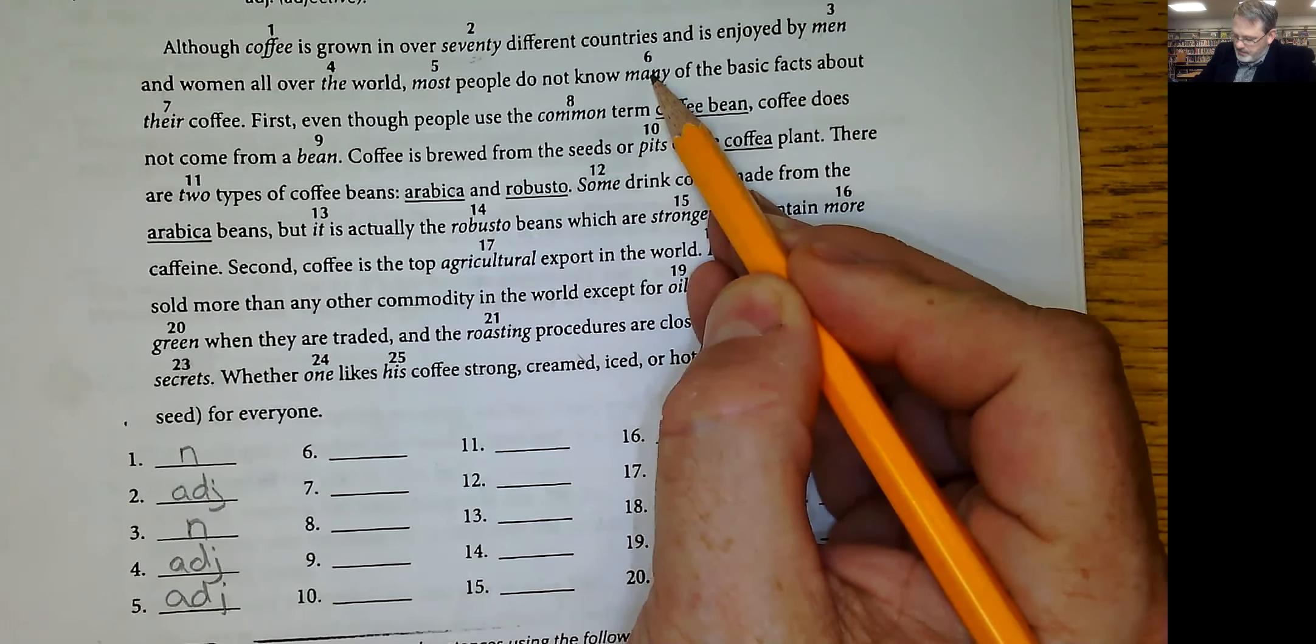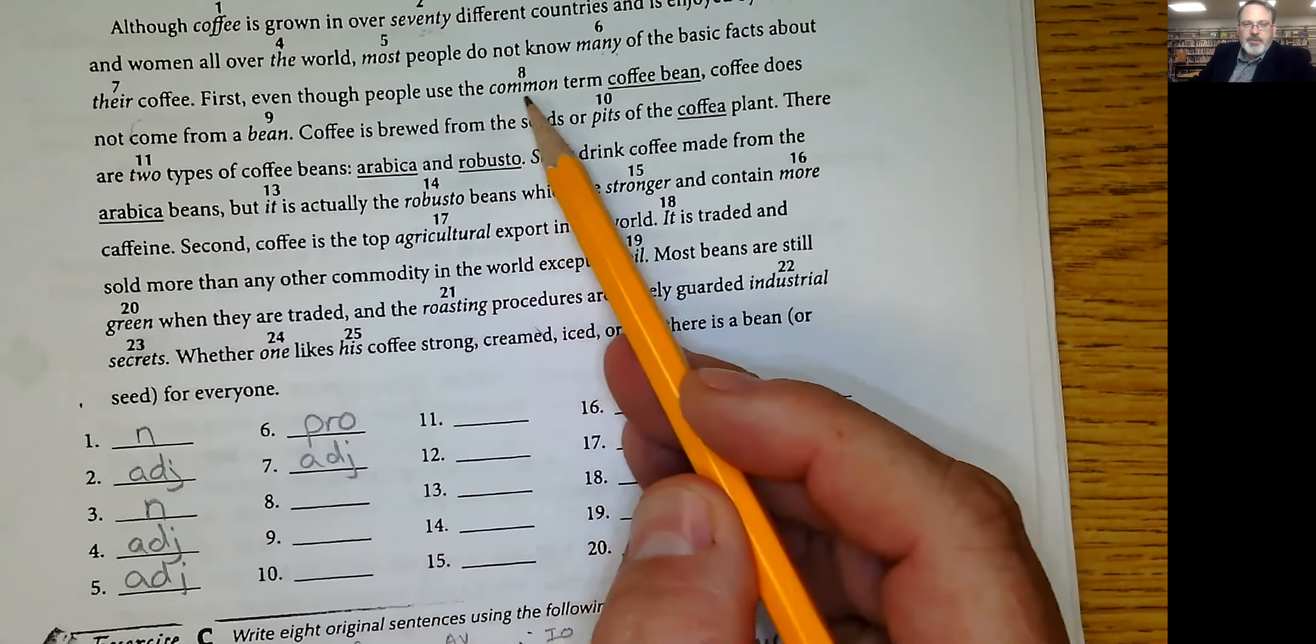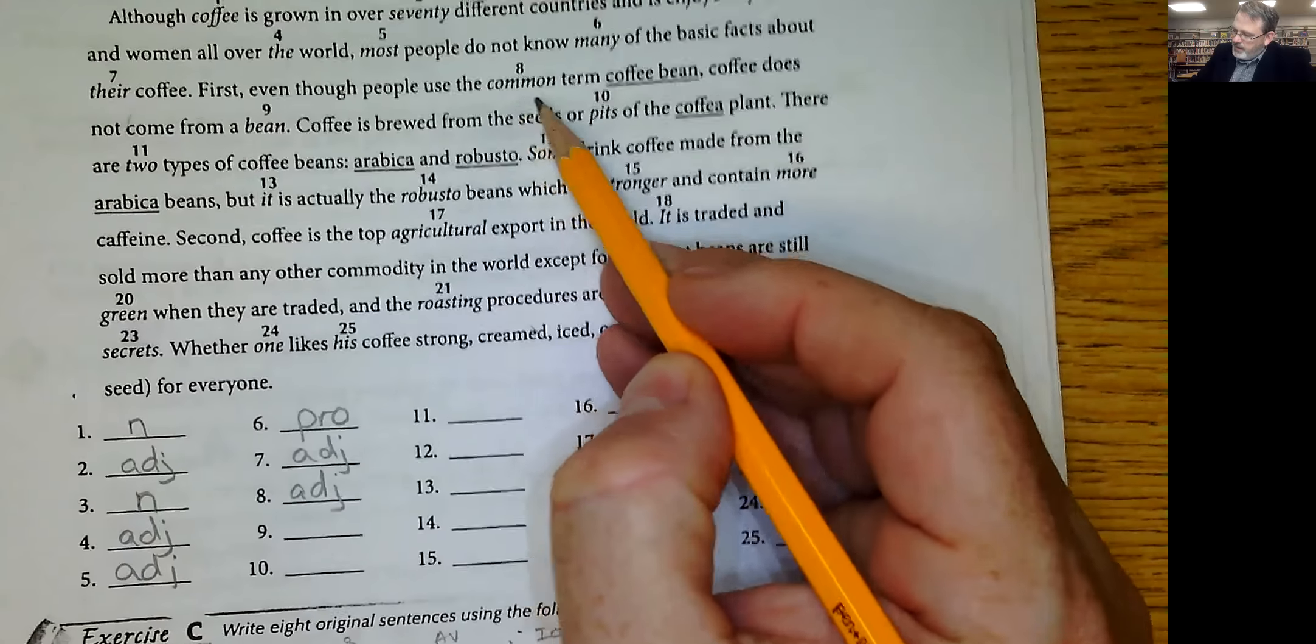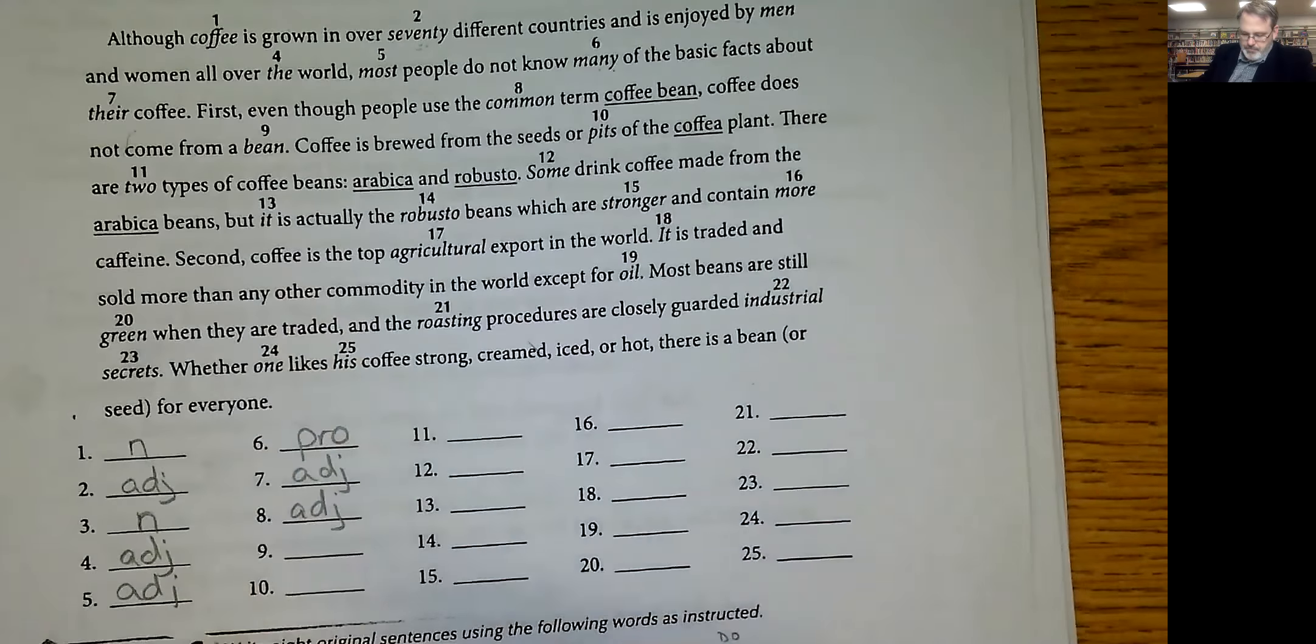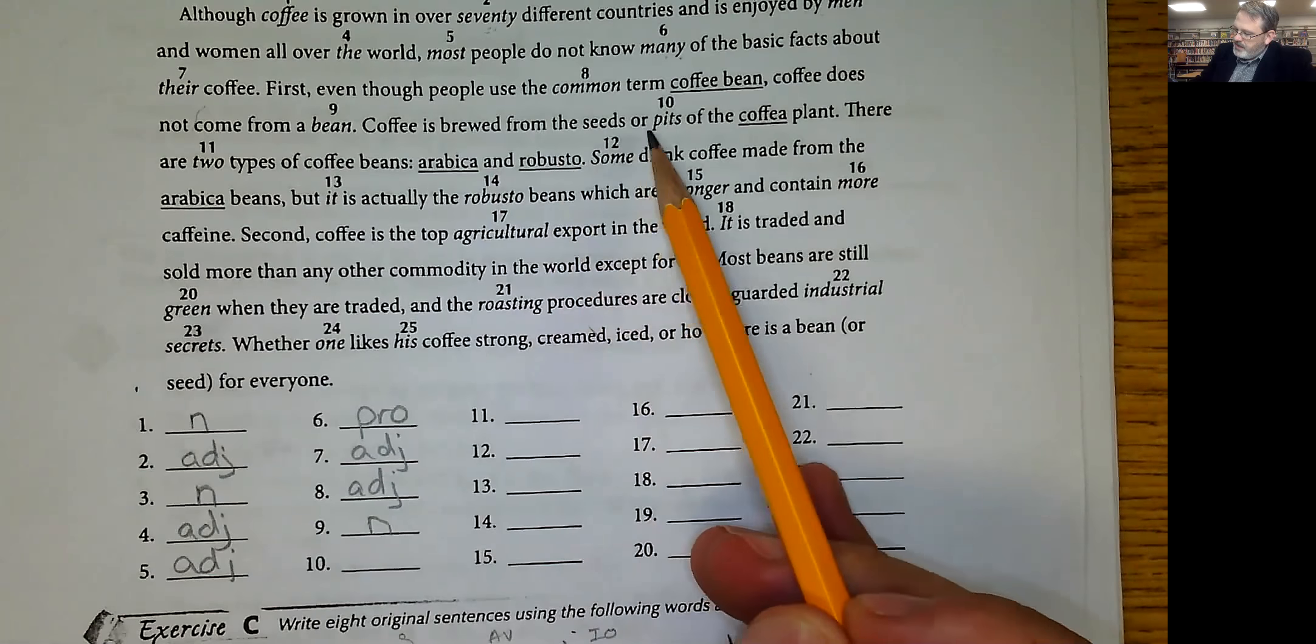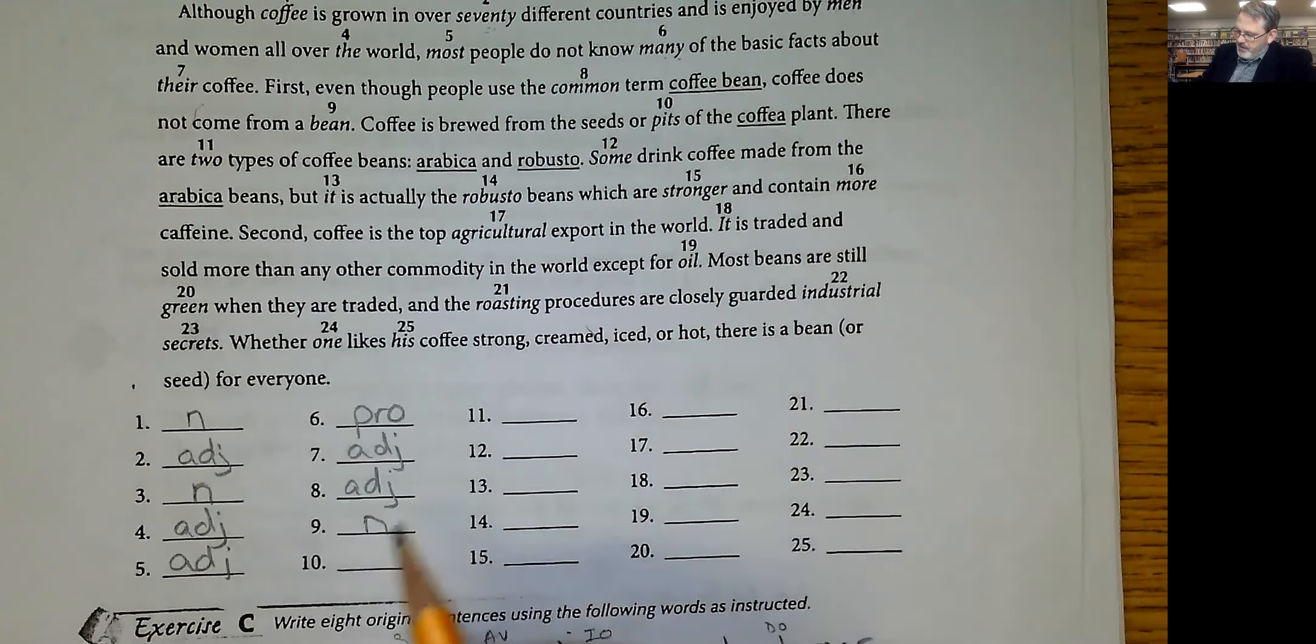Their coffee, that's an adjective. Whose coffee? Their coffee. Even though people use the common term, number eight is adjective as well. Common, what kind of term, a common term. Coffee does not come from a bean, nine is a noun. The thing, coffee is brewed from the seeds or pits of the coffee plant. Pits is a noun as well.